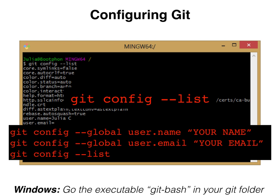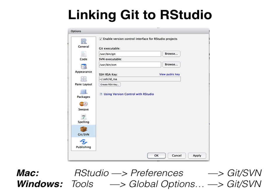Now that you have git fully configured, we're going to move into RStudio to make sure that git is connected to your RStudio. I'll give you a moment to open up RStudio. You should follow the file paths below given for Mac and Windows respectively to get you to this particular window, which is your options menu for git/SVN.